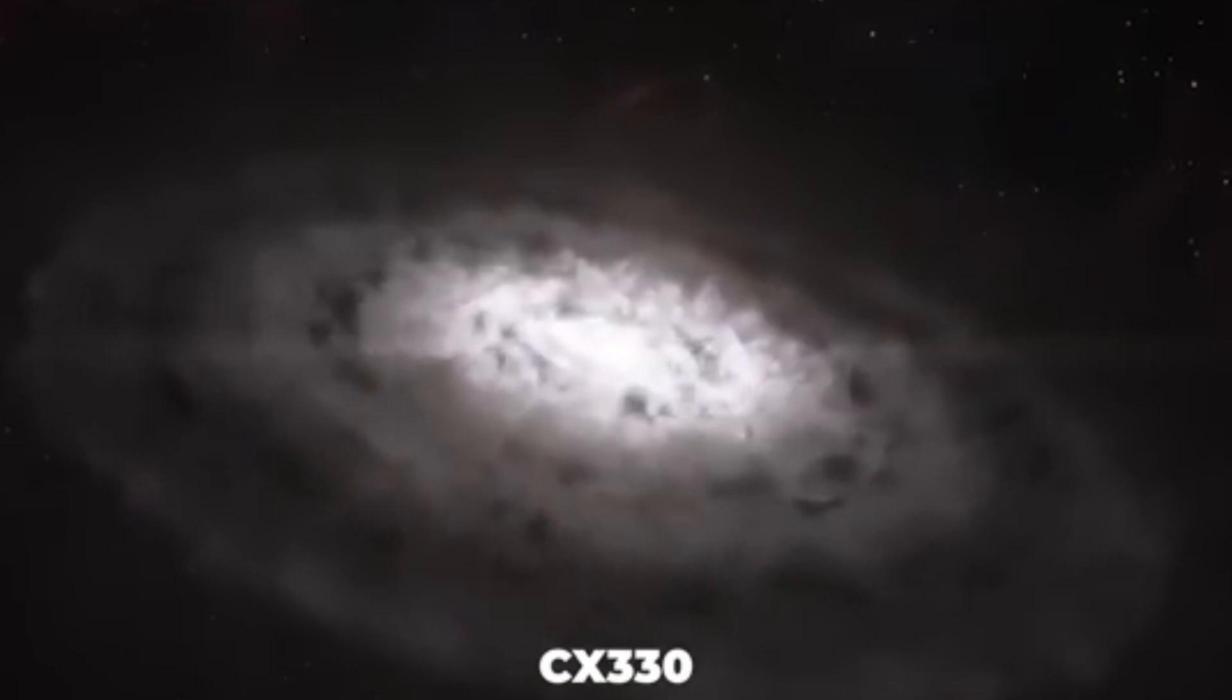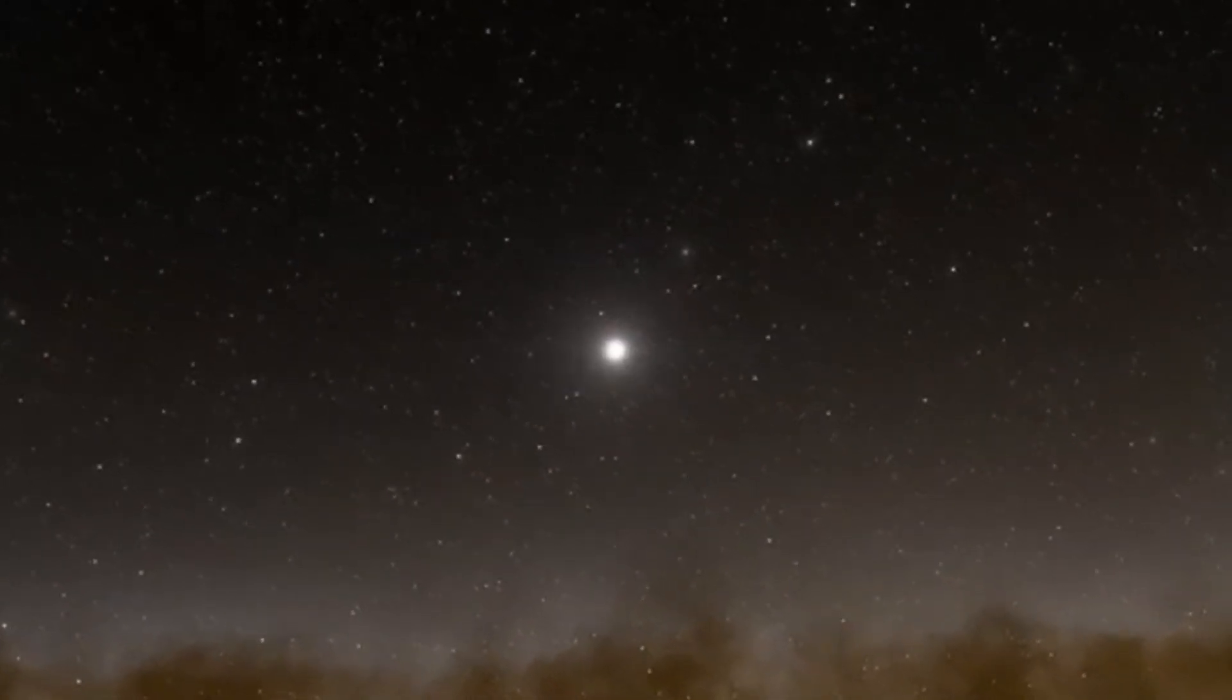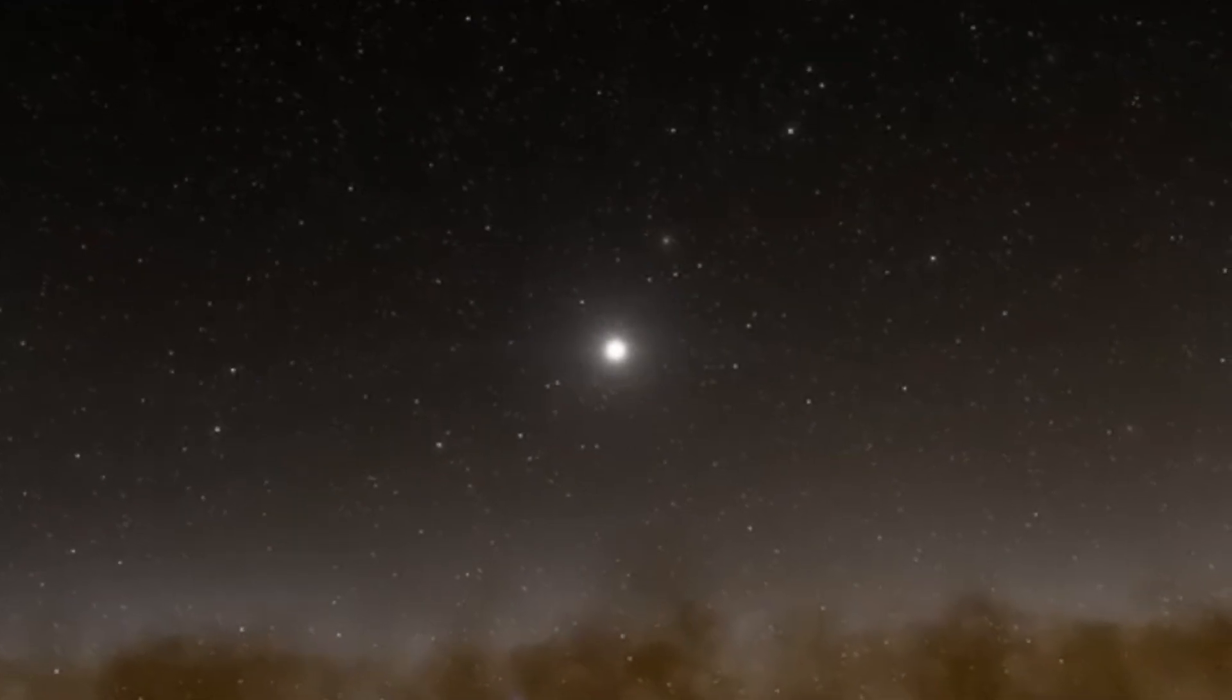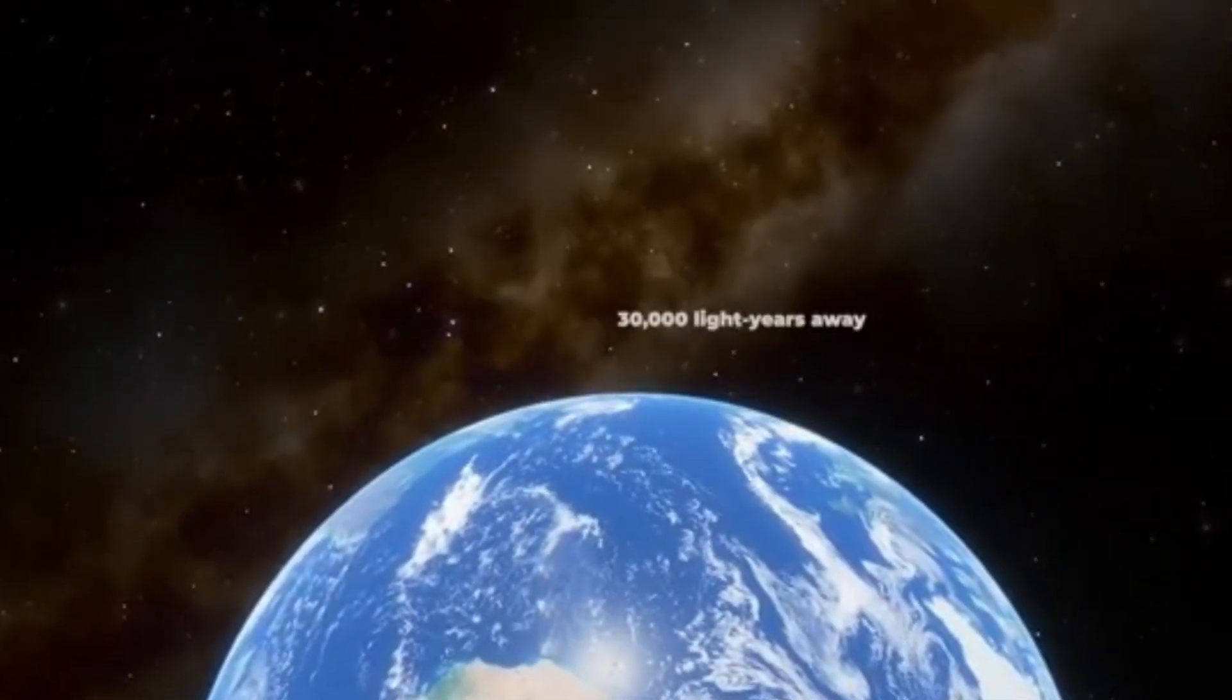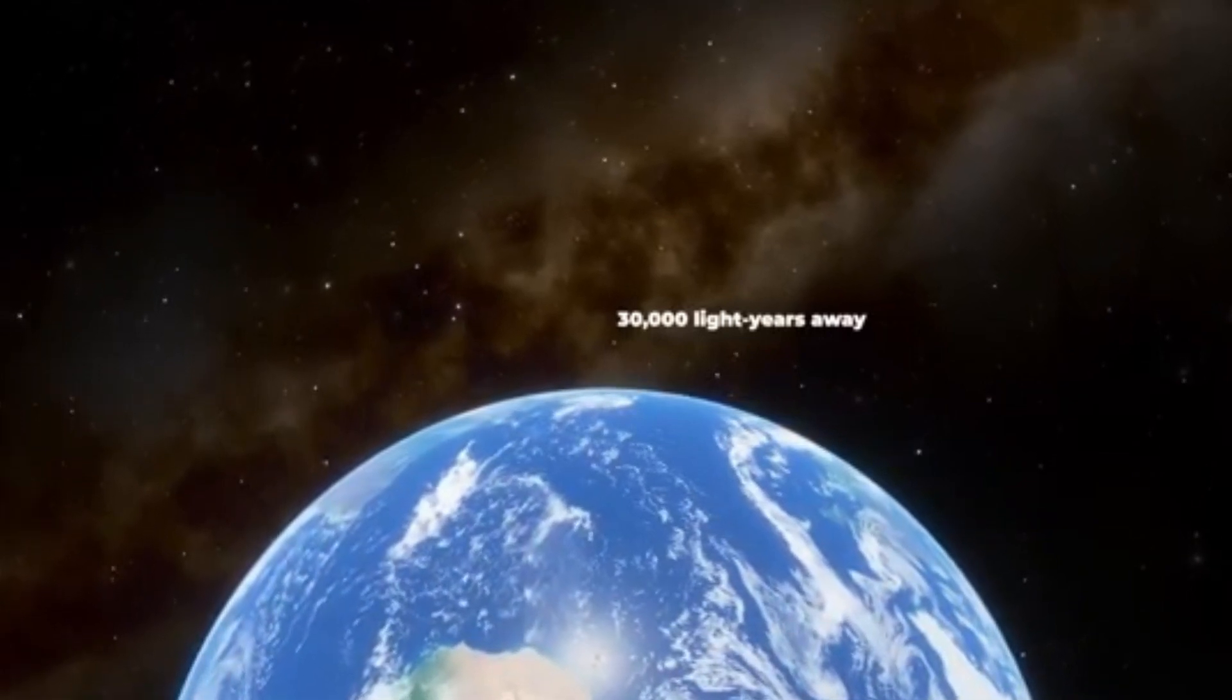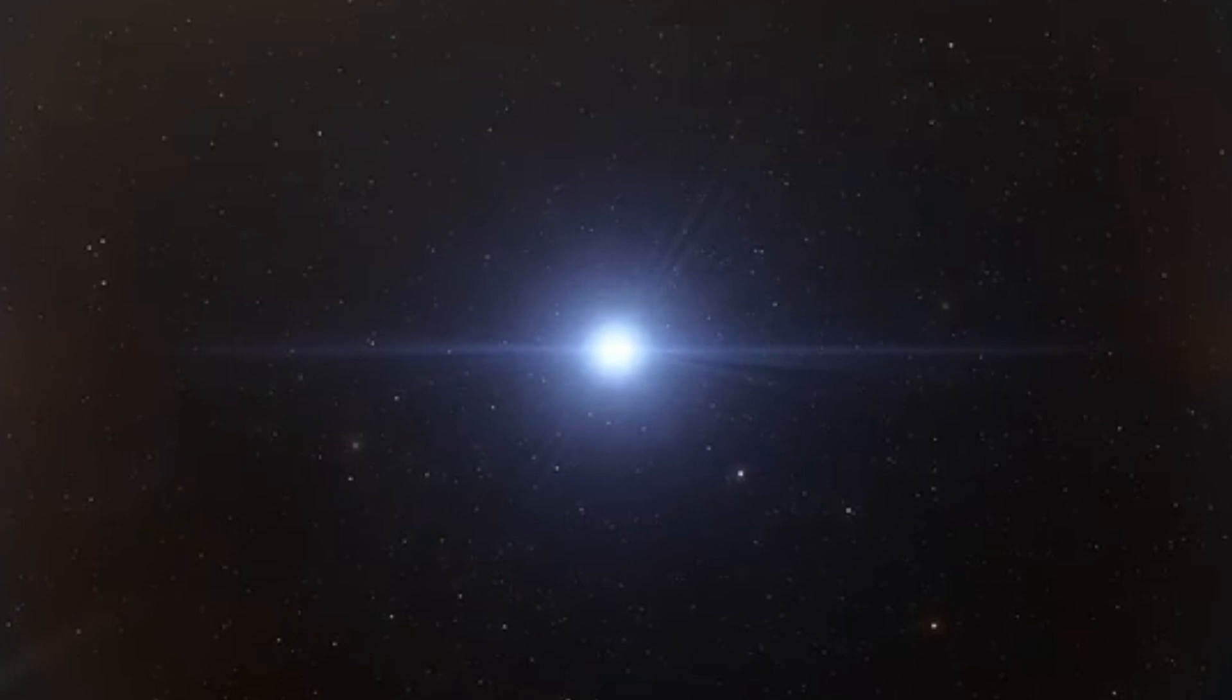Most stars form in bustling regions filled with gas, dust, and other stars. These star-forming nurseries are like cosmic cities, crowded and active. But CX 330, it's way off in a barren stretch of space, like a lighthouse in the middle of a desert. It's located far from the galactic plane, where the majority of stars in the Milky Way reside.